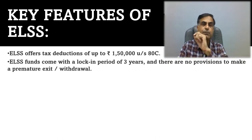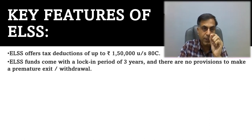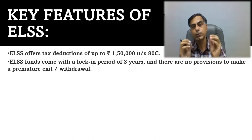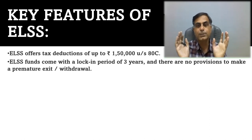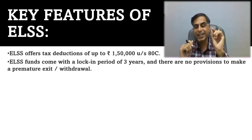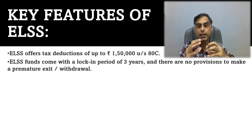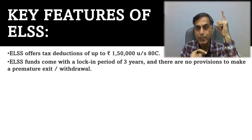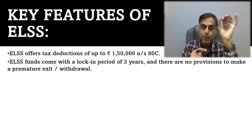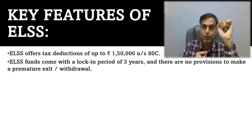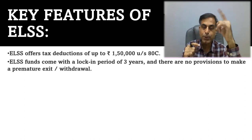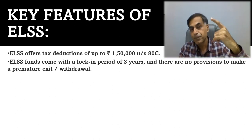ELSS funds come with a lock-in period of 3 years and there are no provisions to make a premature exit or withdrawal — a very, very important point. So whenever you are making an investment in ELSS, you should be ready that your funds would be locked in for a 3-year period; under any circumstance you are not going to get a withdrawal. Secondly, when you invest in ELSS in SIP mode, every SIP will carry a 3-year lock-in from its own date of investment, not from the first SIP. For example, if you invested first in January 2022, that SIP's 3-year period is counted from January 2022. If you invest again in February 2022, that second SIP will mature in February 2025.